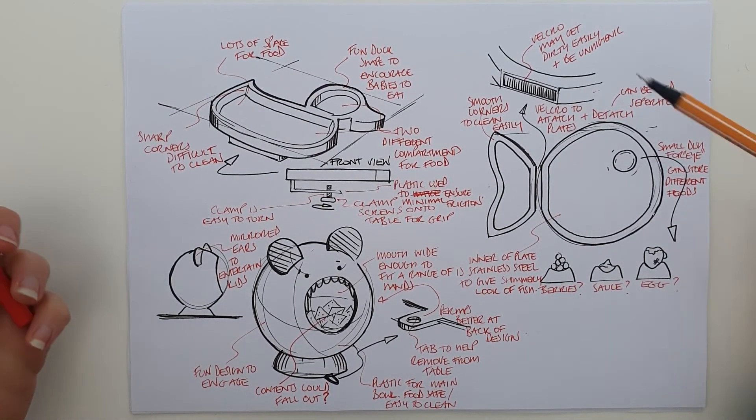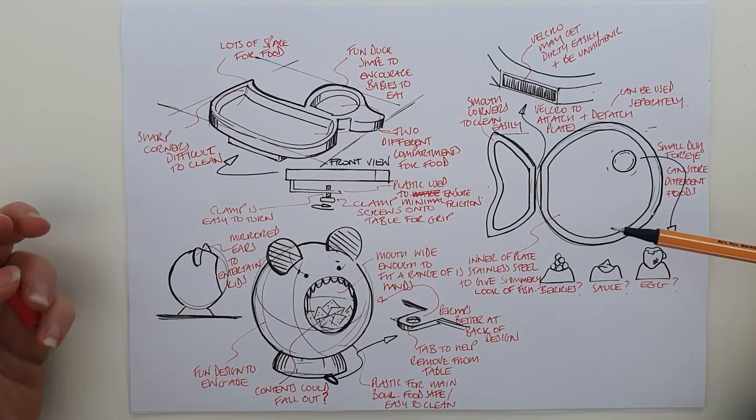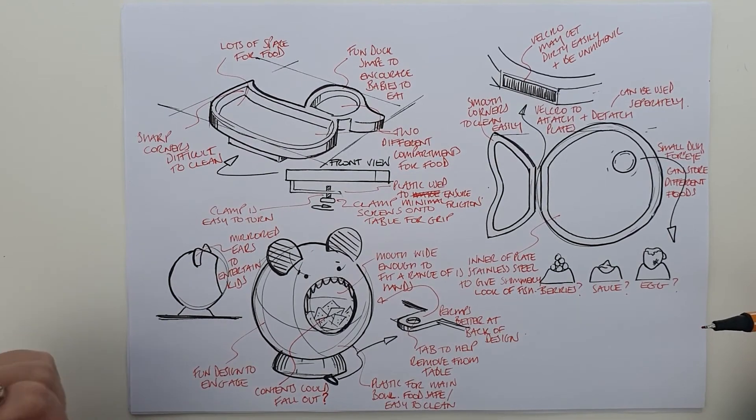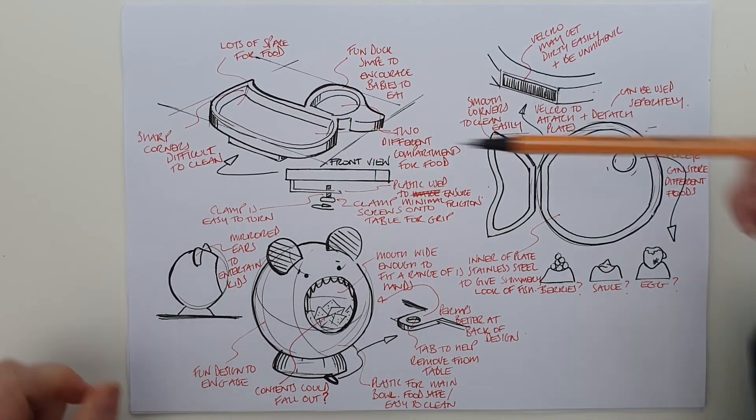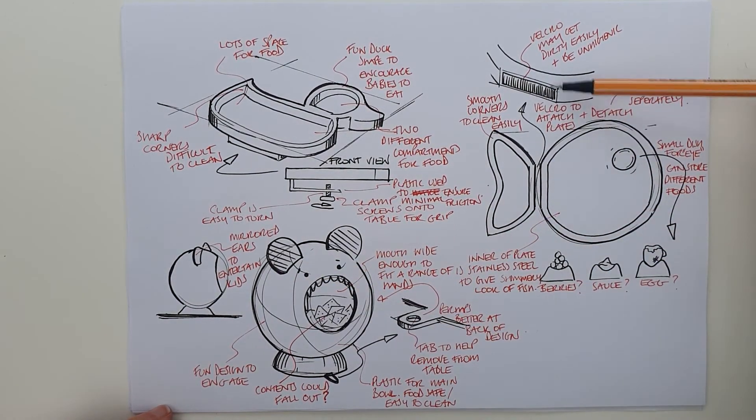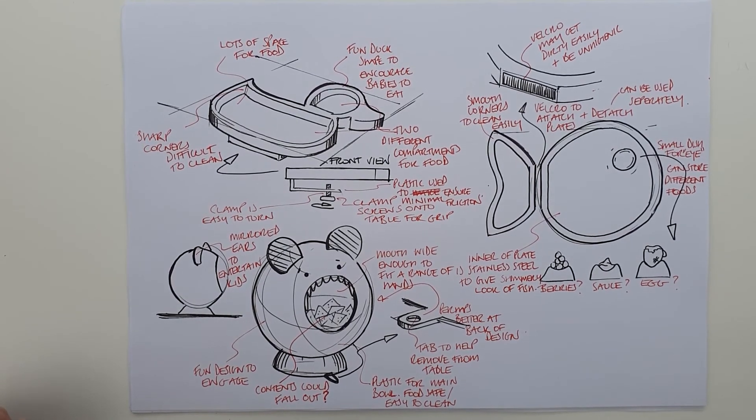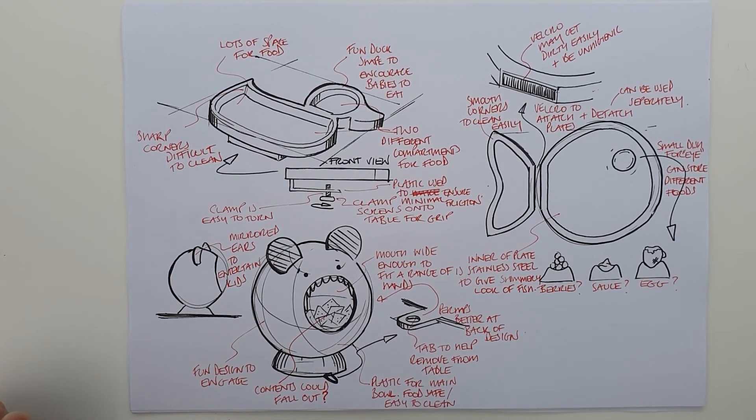Now there are hundreds more annotations that could probably pop on here. I've just done it quickly just now. But if you guys could aim for four or five annotations per sketch and try and sketch different views and little parts of your designs to explain them further, if you can do all of that, then your communication will be excellent.